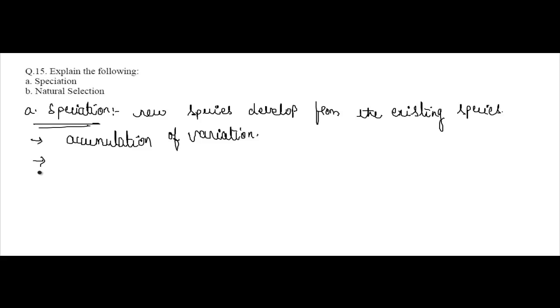Then the process like genetic drift, geographical barriers. So genetic drift, so these are the factors that cause speciation. Genetic drift and also geographical barriers.